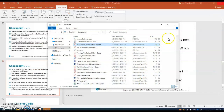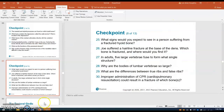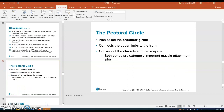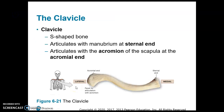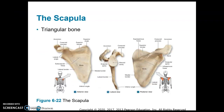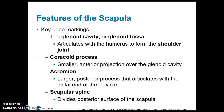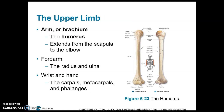Now let's go back to our notes. The pectoral girdle, also called the shoulder girdle, consists of the clavicle and the scapula. And then there are notes on individual bones — there's the humerus.